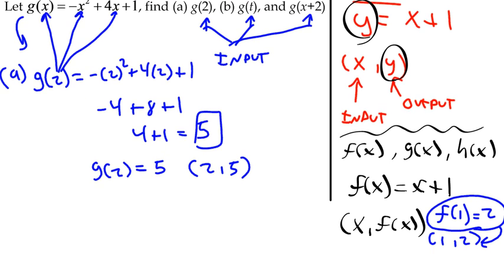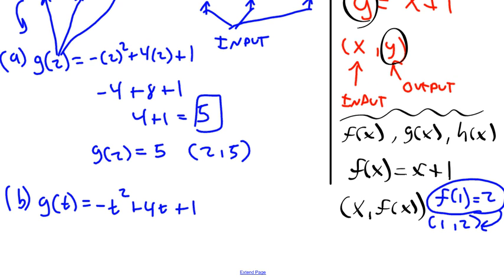Let's now do the next one. This is a three-part problem. Do g of t. So that means we replace all of the x values, replace them all with t now, okay? So everything gets replaced with a t. So negative t squared plus 4 times t plus 1. There's nothing to simplify here. This would be the answer. This is it. You can't simplify t squared plus 4t plus 1. You can't combine anything. So that would be the answer for part b.